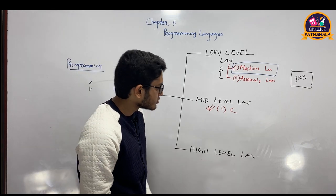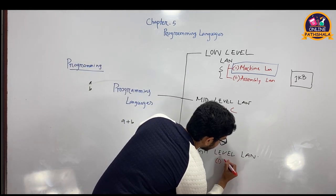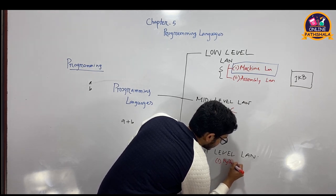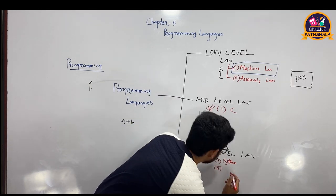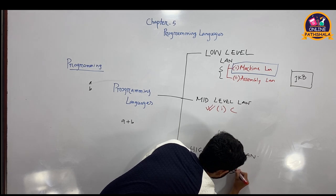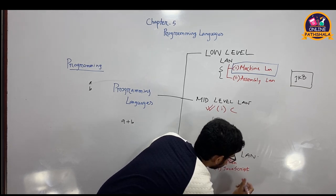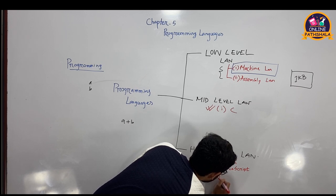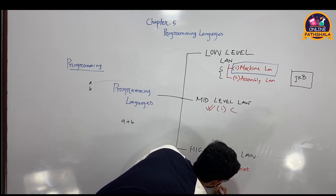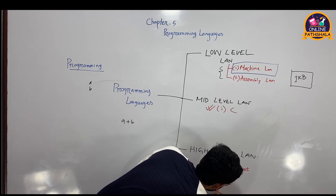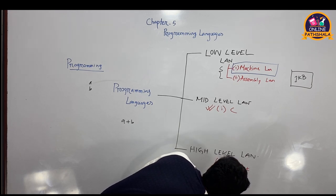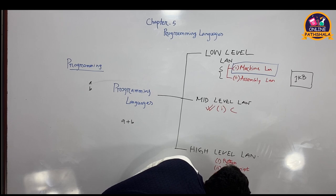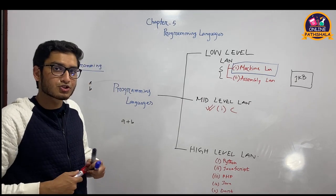The high level languages are many. The most famous high level language is Python. Python is the most popular language right now. There is also JavaScript, which is the second most famous. There is also PHP, Java, Dart, Kotlin, and many other languages. Some of these are the most famous languages, and high level languages are more understandable for human beings.